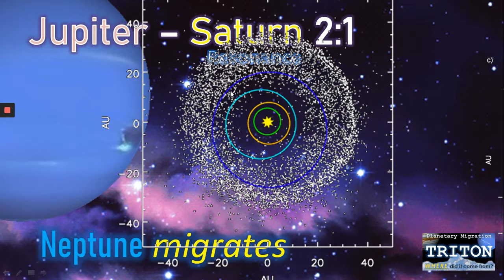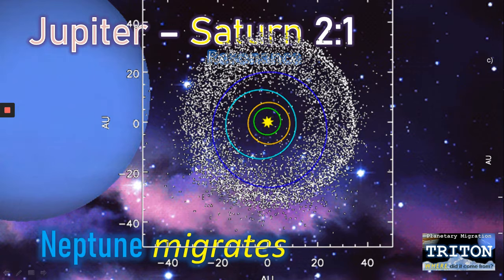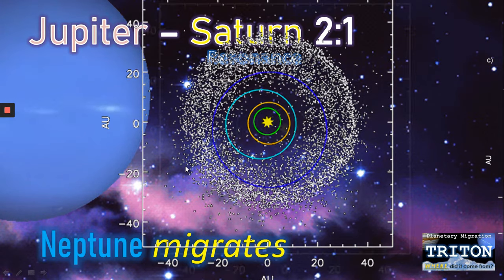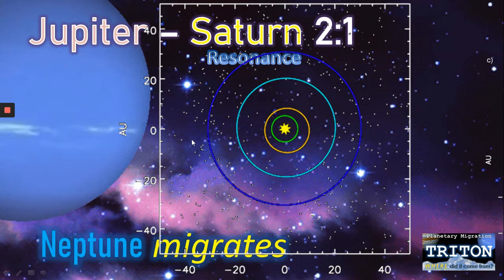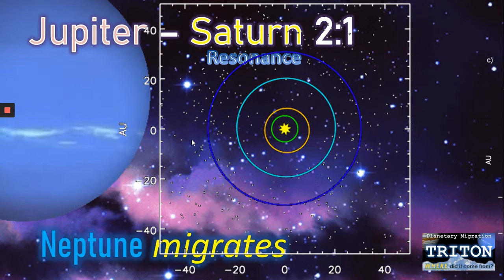In fact, Neptune even went out and surpassed the orbit of Uranus, forming this orbit here. Both were skewed into the Kuiper Belt, which itself became skewed out into the outer solar system, until eventually the four bodies found their own resonance and made a stable system. But how does this explain Triton?